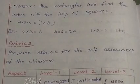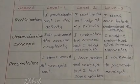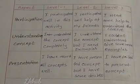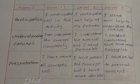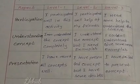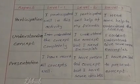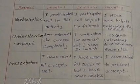Rubrics: prepare a rubric for the self-assessment of the children. The aspects are: Participation, Understanding Concept, and Presentation, rated at Level 1, Level 2, and Level 3.